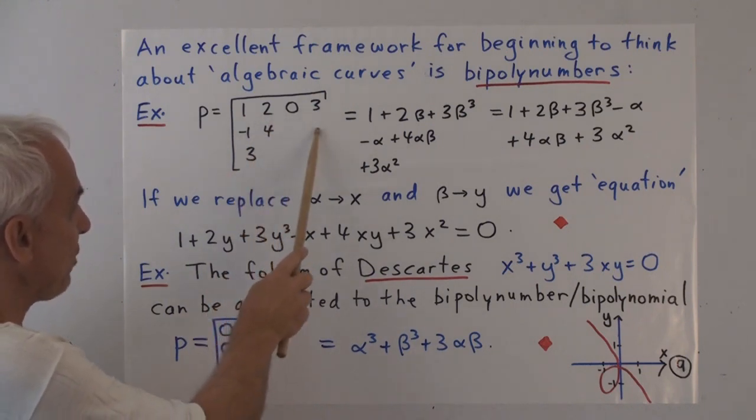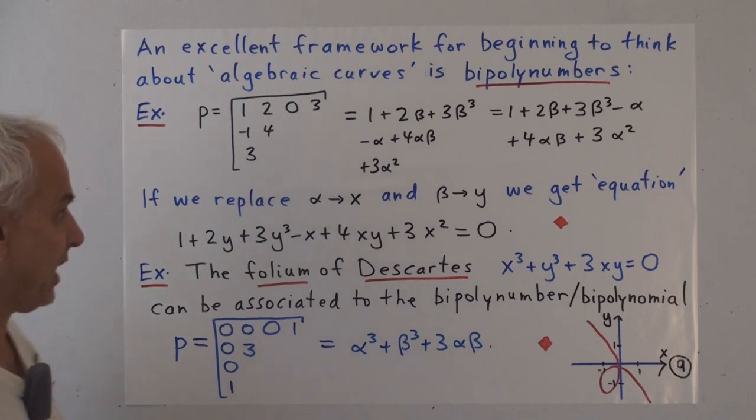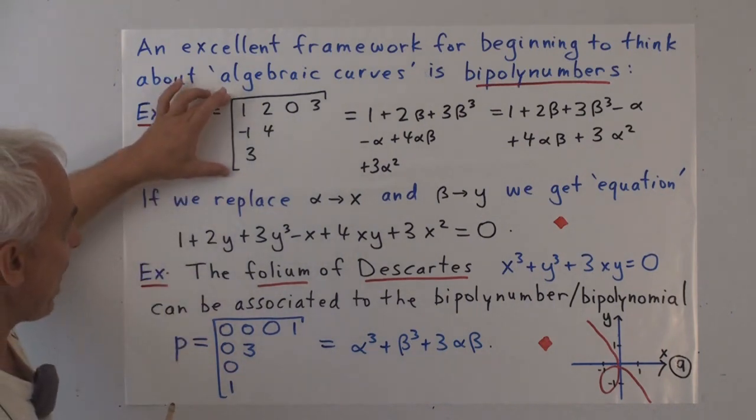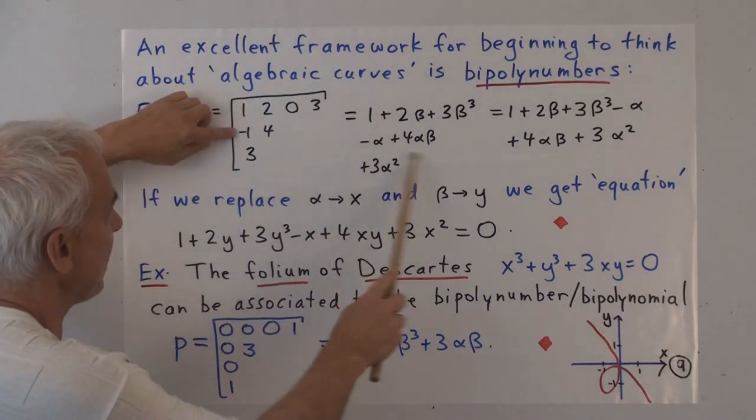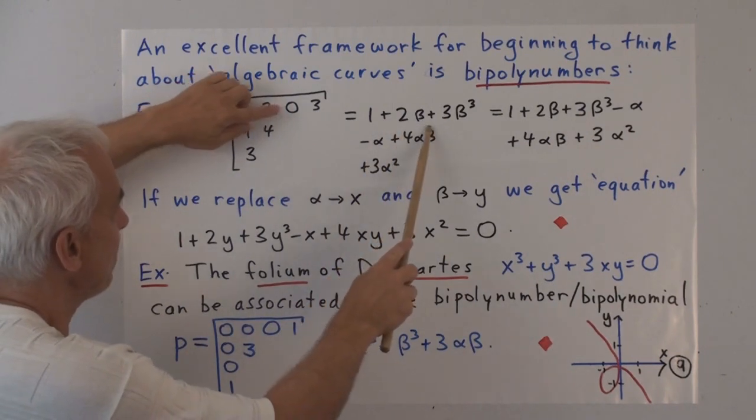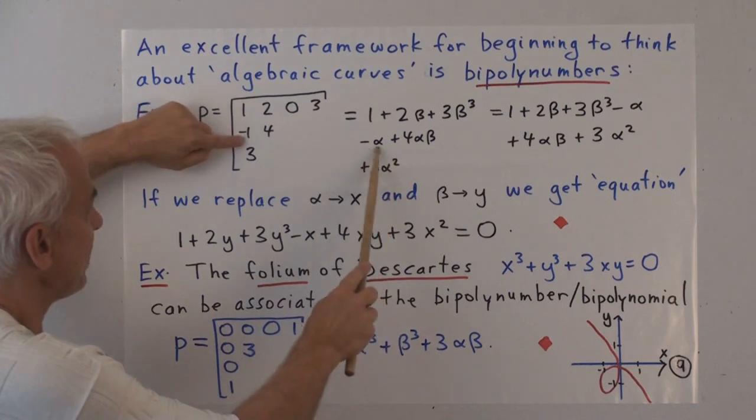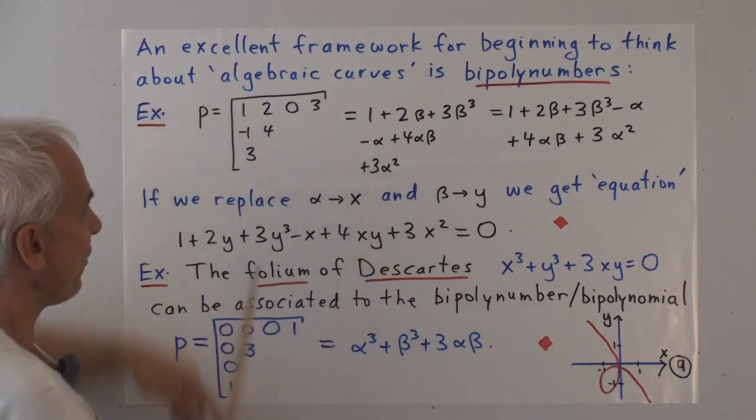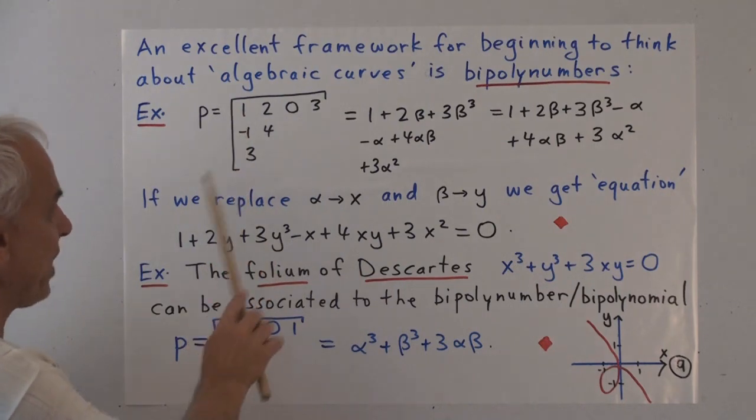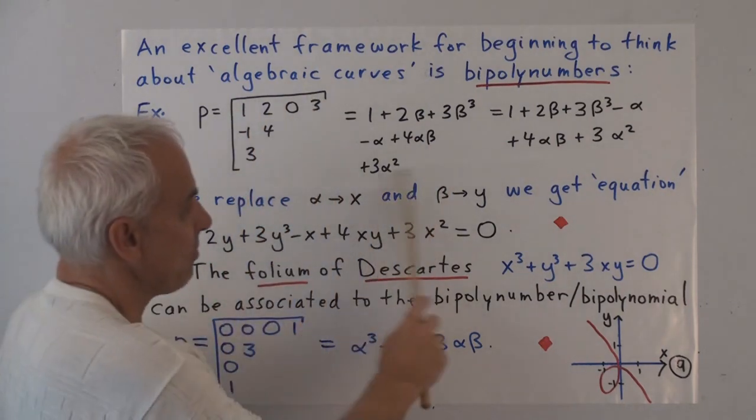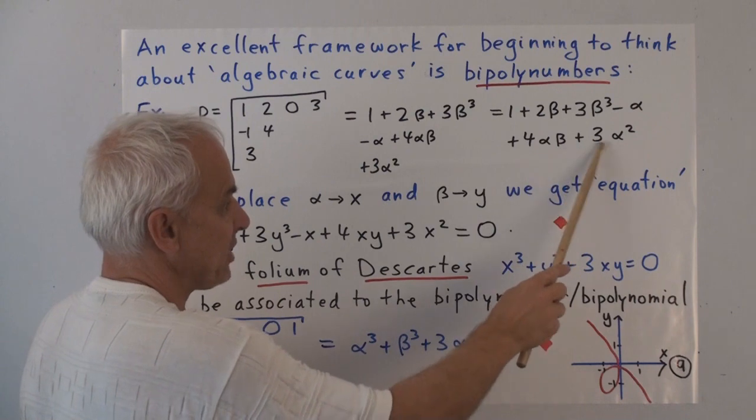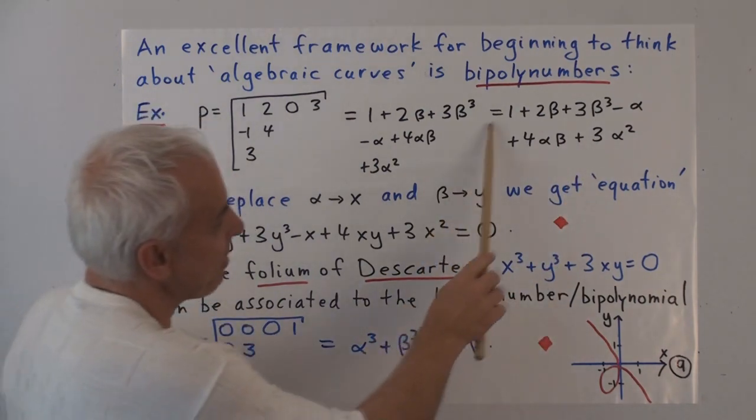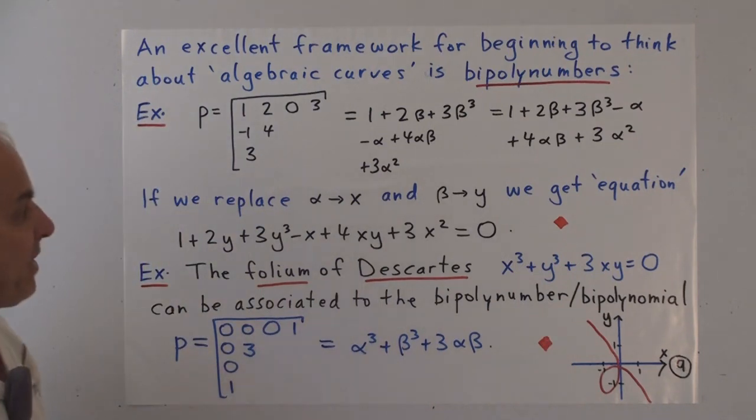Let me remind you that a bi-poly number is a two-dimensional version of a poly number. It's a rectangular array of numbers, and most of the time we'll be using examples where the numbers are integers. For example: one, two, zero, three, minus one, four, three. If you like, you can think of zeros as occupying these other points. This has an alternate expression in terms of alphas and betas. Roughly oriented the same way here: one plus two beta, zero beta squared, three beta cubed, minus alpha plus four alpha beta, plus three alpha squared. Increasing powers of alpha in this direction and betas in this direction. We would write this more usually just in a linear fashion. Whether we're talking about this as a polynomial in alpha and beta or this thing as a poly number, it's pretty well the same thing.